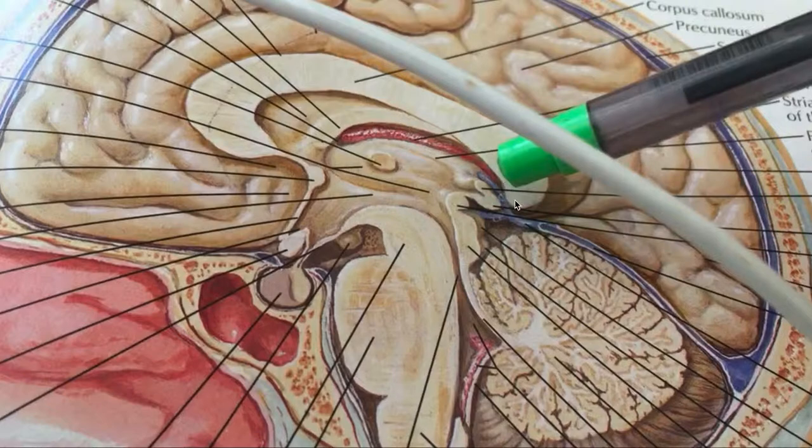Let's quickly review fornix. Now remember, we had the right and left crura. Your right and left crura would have been here beneath the splenium of corpus callosum. You have your rostrum here, you have your genu, you have your truncus, and you have your splenium body, or trunk body.